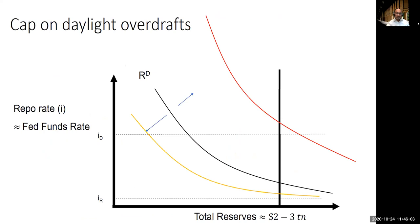The last main result I take away from this paper is that the liquidity stress requirement and the cap on daylight overdrafts basically means that within a day, the supply curve of reserves is completely inelastic. As demand starts to shift up, the interbank interest rate can clear at a rate much higher than the discount rate. What you would have done pre-2008, as the interest rate in the middle of the day starts to rise above the discount rate, is run a daylight overdraft — effectively run a negative balance and then make up for it by borrowing from the Fed at the discount rate. That intraday arbitrage behavior would cap the interbank interest rate at the discount rate. That's no longer possible, and so the interbank interest rate is allowed to rise above the discount rate.